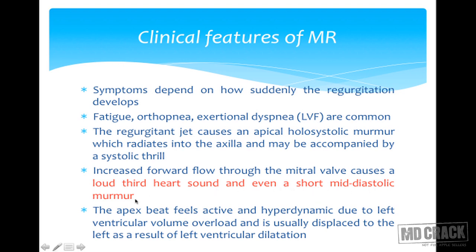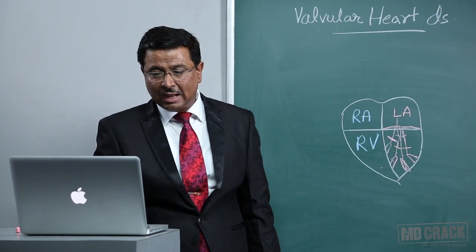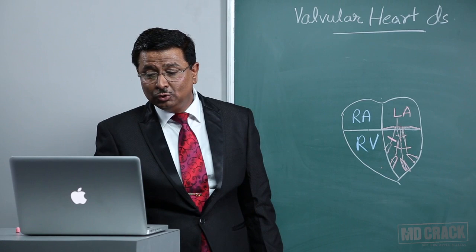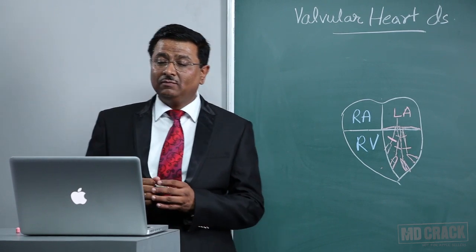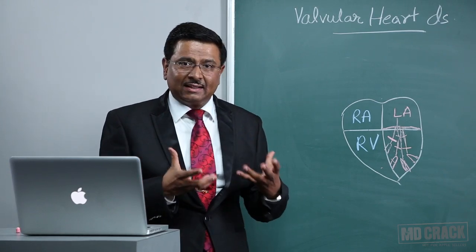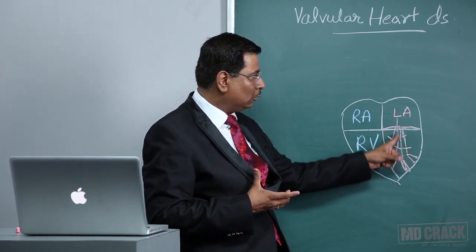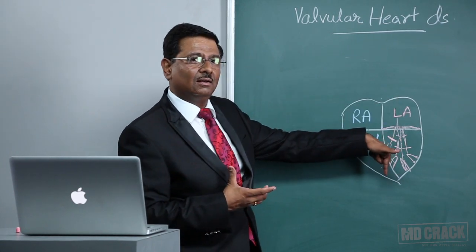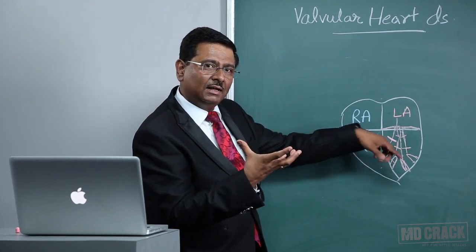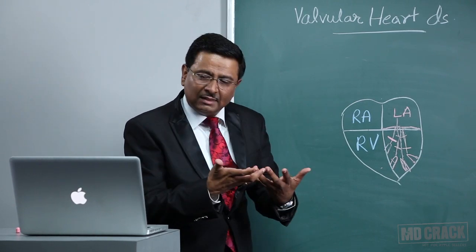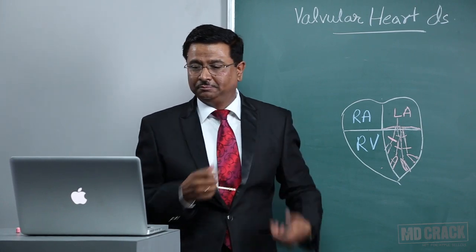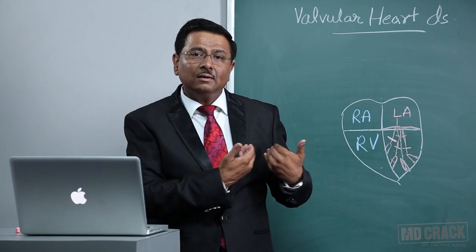The third heart sound occurs when blood comes from the left atrium into the non-compliant left ventricle. The apex beat feels active and hyperdynamic due to left ventricular volume overload, and is usually displaced to the left as a result of left ventricular dilatation. The apex is hyperdynamic because some blood returns to the left atrium and then comes back to the left ventricle, meaning the left ventricle is handling more blood and becoming overloaded.